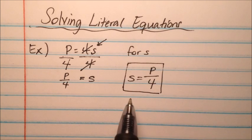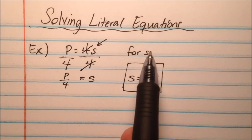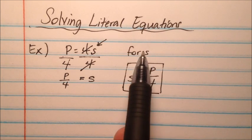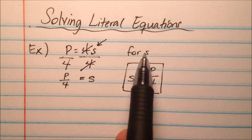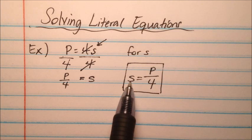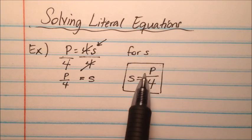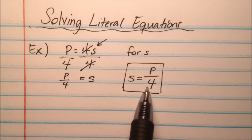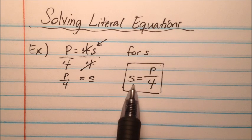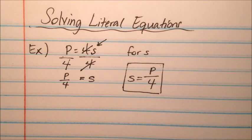We know we have the answer we're looking for because the problem tells us which variable to solve for. Once that variable is isolated and everything else is on the other side, we know we're finished. That's the solution for the first example.